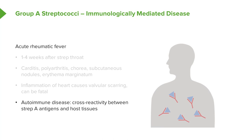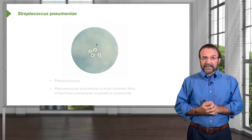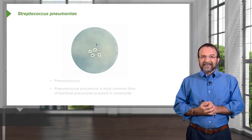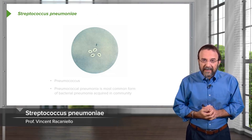Rheumatic fever is an autoimmune disease. We make antibodies against the bacteria as they grow in us, but some of those antibodies also recognize our own heart tissue and begin to attack and destroy it. This doesn't happen in everyone and is probably a consequence of your particular immune makeup.